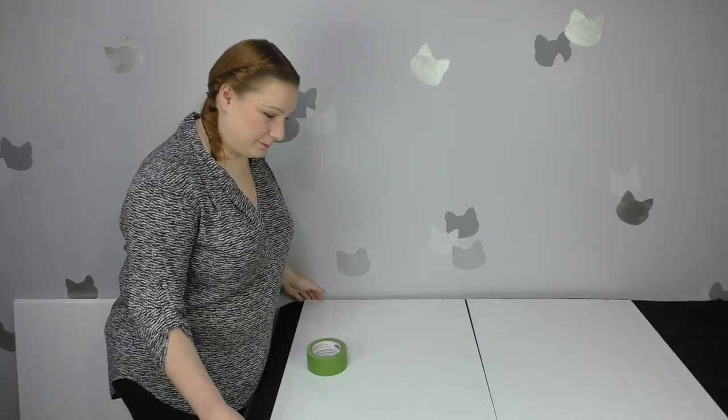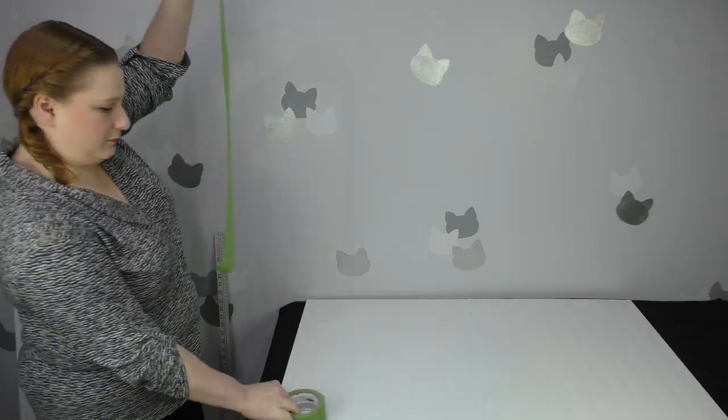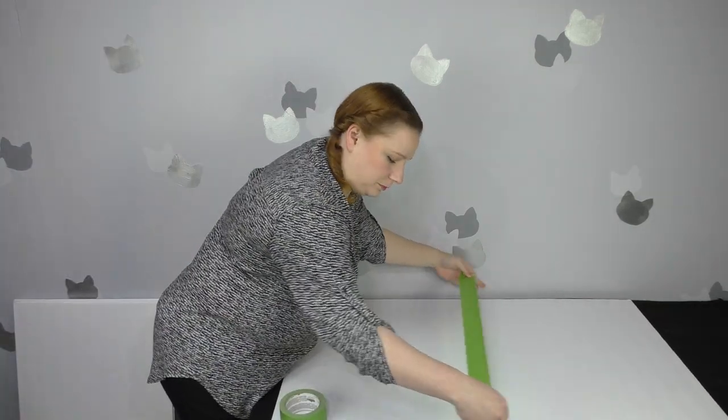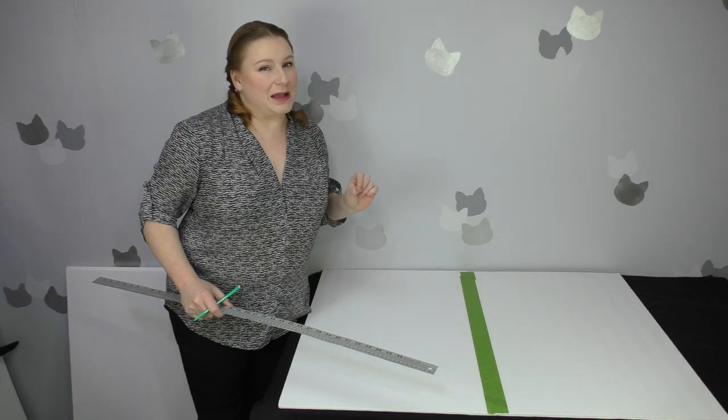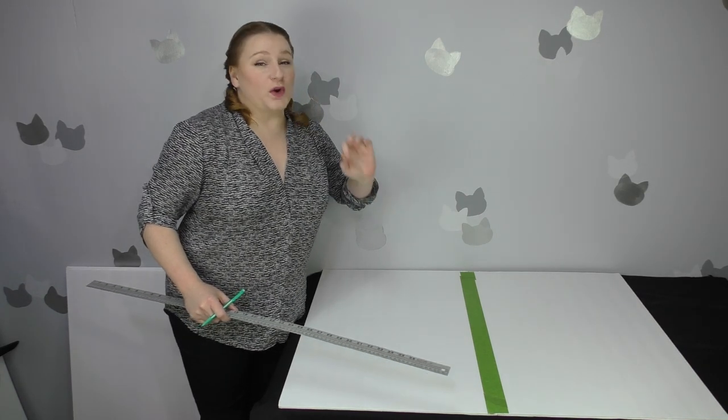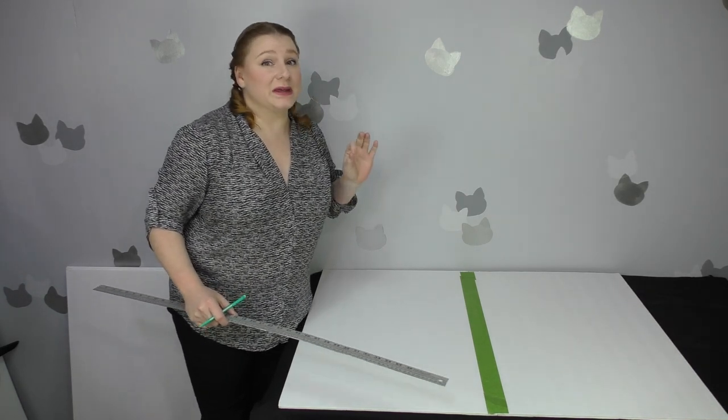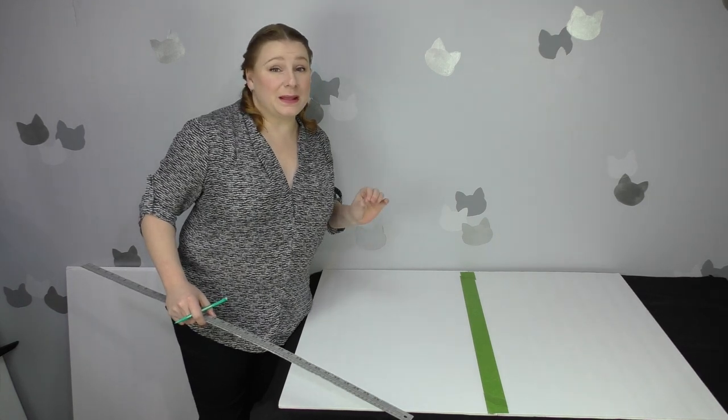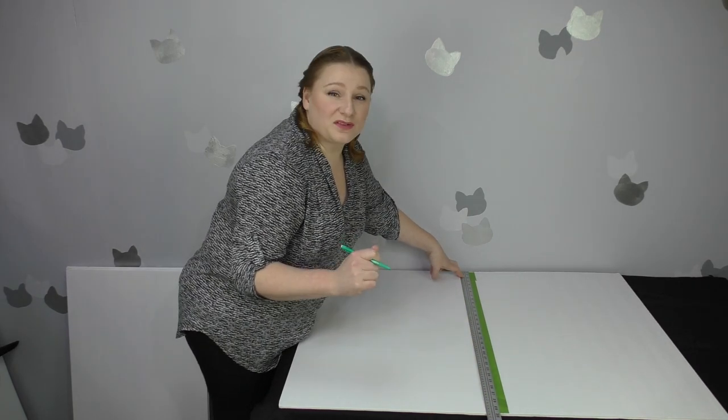To get started, I'm going to tape two pieces of foam board together down their long edge. Now I'm going to find the exact middle of the sheets. Remember, foam board is not always cut to exactly 30 inches and each one may be a little off from the other. So just do the best you can. Mine is 29 and 3/4 inches, so I'm going to find the halfway point. To make it easy, I just had about 14 and a half inches. We'll have a little extra wiggle room on one side, no big deal.